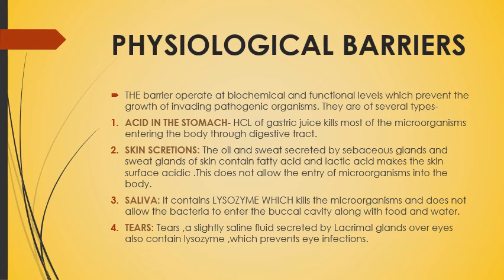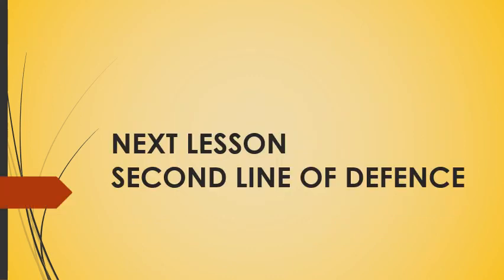So the first line of defense consists of physical and physiological barriers, which prevent the entry of microorganisms. When they cross this first barrier, then the role of the second barrier will come into existence. This is all for today. The next lesson will be on the second line of defense. Till then, goodbye, stay safe, stay happy, and stay healthy. Thank you.